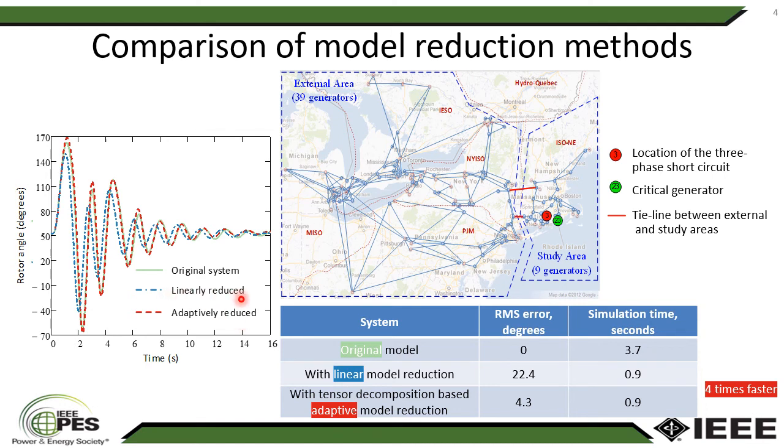However, if you use linear reduced model, we use balanced truncation in this case, it doesn't follow the original trajectory well. And this can also be seen based on the root mean square error. The linear model reduction creates 22 degree error while the proposed adaptive model reduction has just 4 degree error while maintaining the same simulation speed as the linear reduced model.